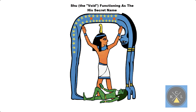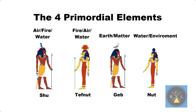Nut and Geb are actually Tefnut as the primordial fire in her next more complex phase, coming closer still to materialization. This is all occurring simultaneously at the big bang. Just as Atun became Shu and Tefnut, Tefnut with the help of her twin Shu becomes Geb and Nut. But the properties of Shu and Tefnut don't disappear — they simply formulate into something different, but with their elements as the foundation of what the next phase becomes.